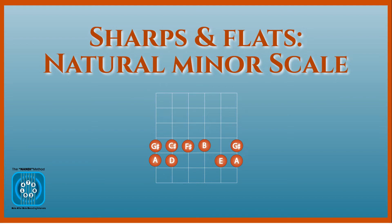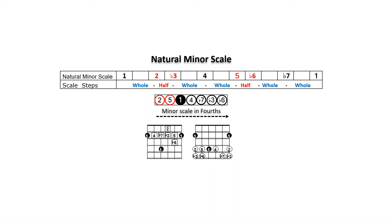In this lesson, we will discuss how to identify the accidentals in minor scales using the Nandi method. The intervals of the natural minor scale in the order of fourths is shown below. Remember that the natural minor scale is also known as the Aeolian mode, the sixth mode of the major scale. There are a couple of shortcuts we can use to identify sharps and flats in a minor scale without building the entire scale in whole steps and half steps.